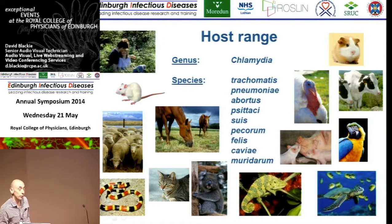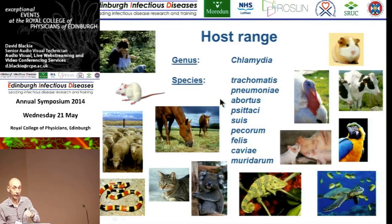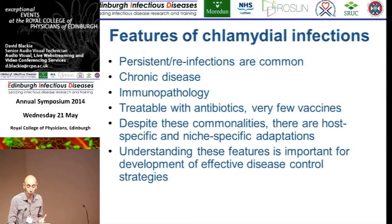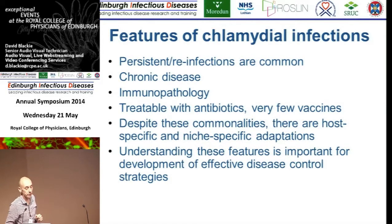The host most people will be familiar with is the human host, but you can see a wide range of animal hosts, and some of these pathogens are zoonotic. In some animals in zoos, we think infection has gone from the human handler to the animal, not the other way around. Common features are persistent infections or reinfections associated with chronic disease and immunopathology. These features have been the real problem in generating vaccines against chlamydia, because if you've got immunopathology and chronic disease, it's very problematic to get a vaccine that works without causing damage.